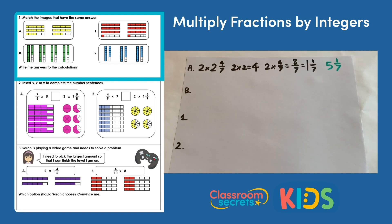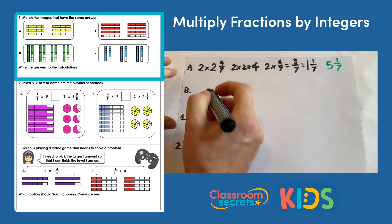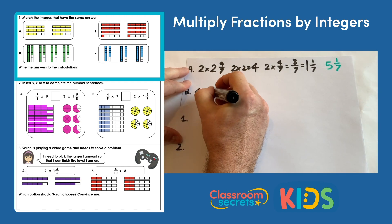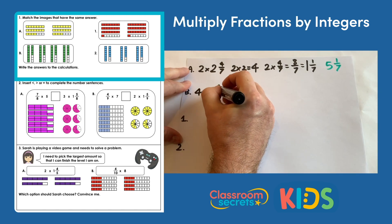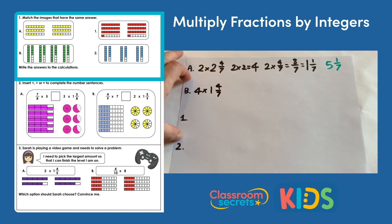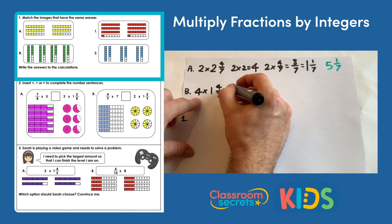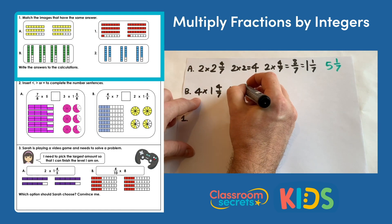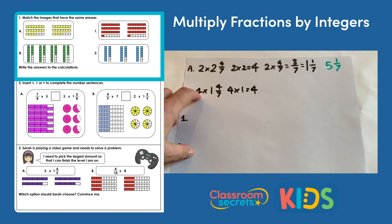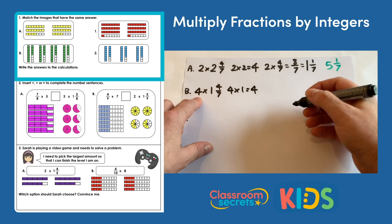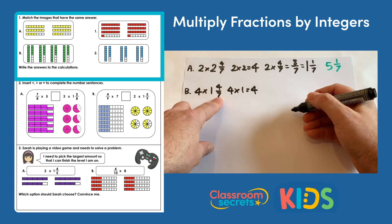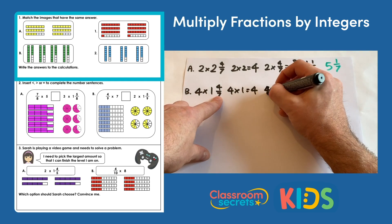For b we have four lots of one and four sevenths, so that would be four multiplied by one and four sevenths. We'll multiply the whole numbers first, so four multiplied by one is four, and then we're going to multiply the fraction.